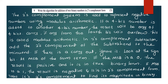Write the algorithm for addition of two binary numbers in two's complement form. The two's complement system is used to represent negative numbers using modulus arithmetic. If a 4-bit number is added to another 4-bit number, the result will be only 4 bits. Any carry from the 4-bit result will overflow — this is called modulus arithmetic.